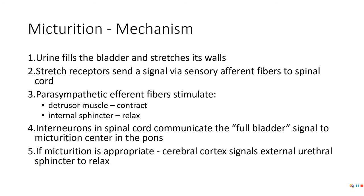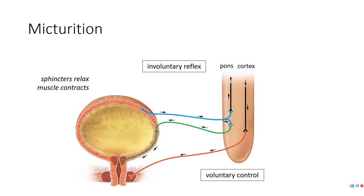So there is a voluntary and involuntary component to this. All right, so let's go through this just with a different diagram. So you've got an internal and an external sphincter. With the micturition reflex, it's involuntary and mediated by the parasympathetic nervous system. Remember, parasympathetic nervous system you have no control over. Urine fills the bladder, stretches its walls out. These stretch receptors send a signal to the spinal cord.